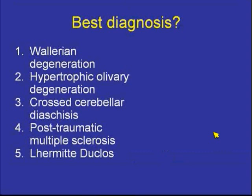Best diagnosis here — Wallerian degeneration, hypertrophic olivary degeneration, crossed cerebellar diaschisis, post-traumatic multiple sclerosis, or Lermitte-Duclos? Let's start the timer.